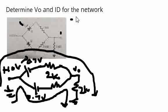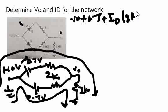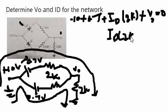This is minus 10, plus 0.7, plus, let us treat this as ID only, ID into 2K. That is the voltage across this, right? Plus, you can put V0, V0 is equal to 0. Now, this becomes ID into 2K plus V0 is equal to 9.3. That is the outer one.